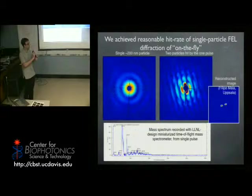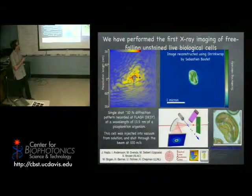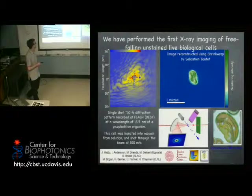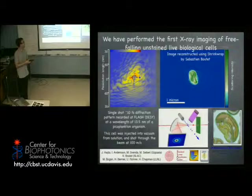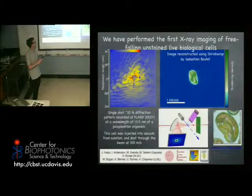We then started spraying all sorts of things inside this device. This was some kind of biological cell — from the wavelength we got, the image you can see is essentially only the outline of the cell. We also achieved a fairly high hit rate. Here, for example, there are two particles at the same time in the X-ray beam — you can see the fringe pattern that looks like the diffraction pattern from two dots that was shown in the beginning.